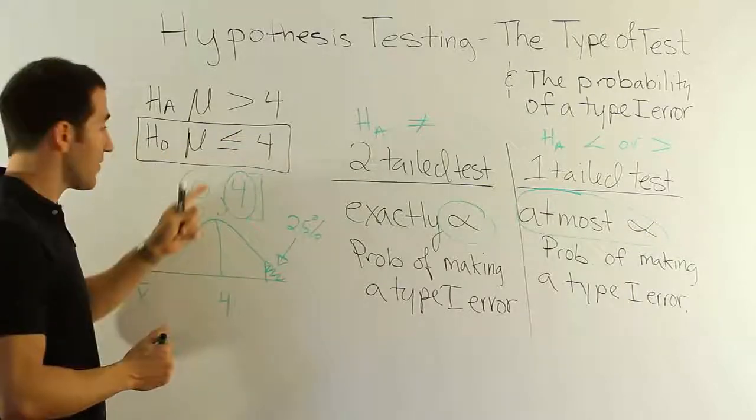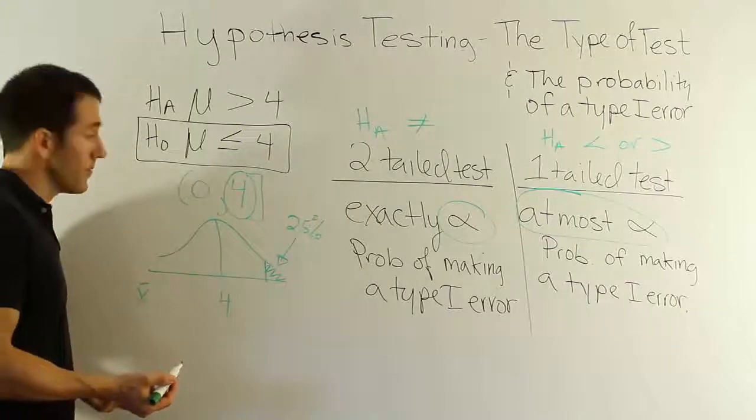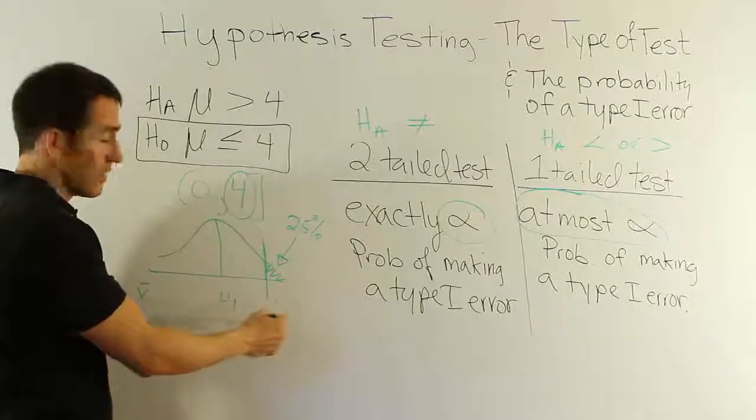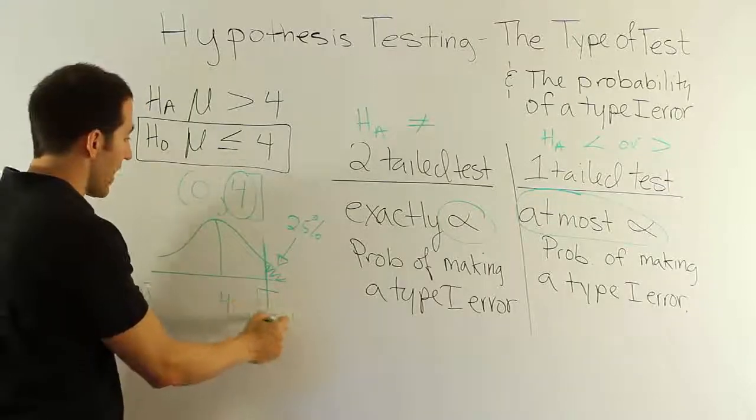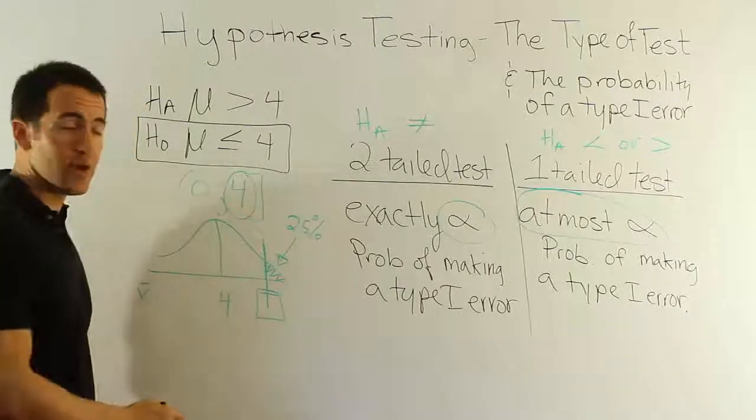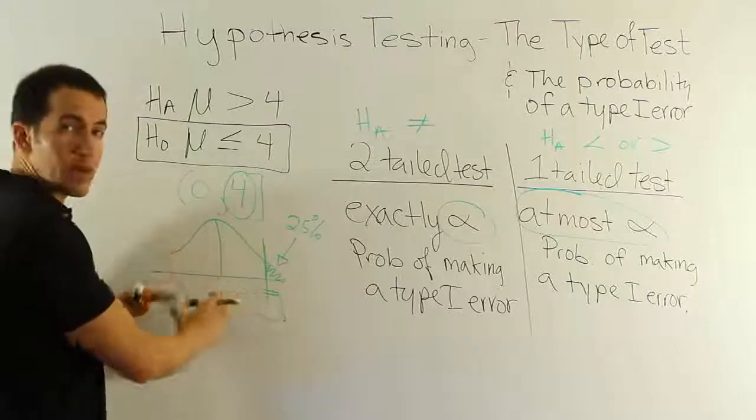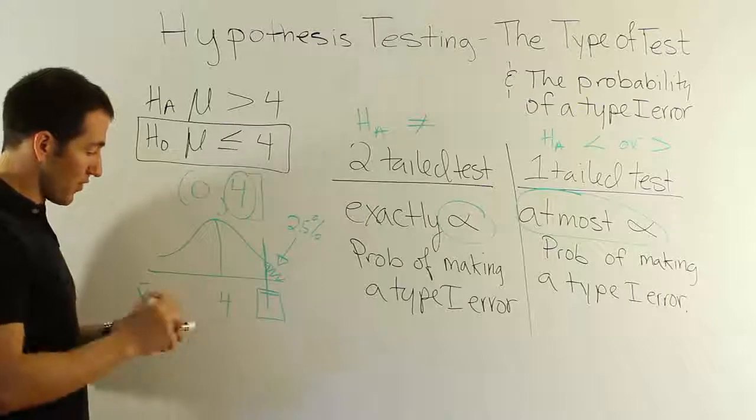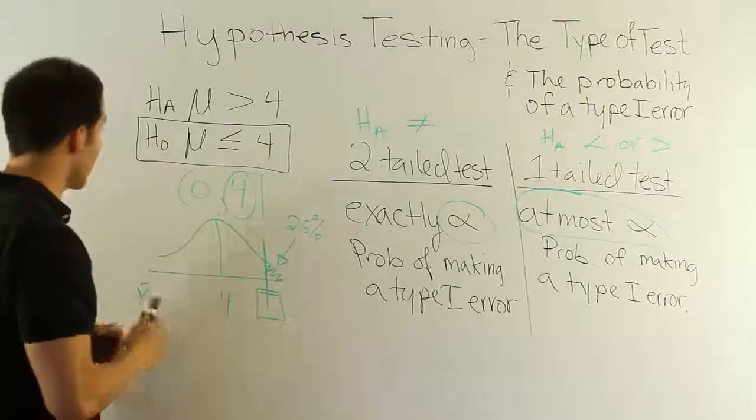But remember, we made the assumption that it would be 4. H0 could still be true and have the mean be 3, couldn't it? And if that was the case, think about it. If we decide that we're going to reject here, this is where we're going to reject. If you go past this point, we're going to reject H0. Well, if that's what we're doing, our modeling, that's how our test is being conducted. But let's say the real-world data, and I'll use the black marker to express the real-world scenario.